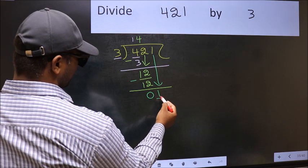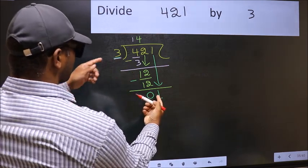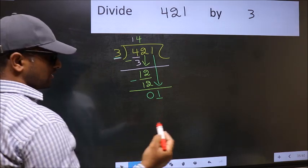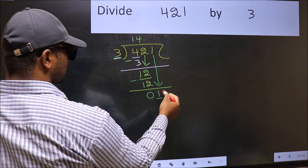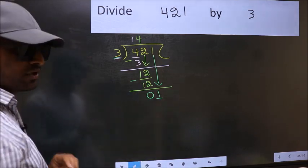And the mistake is this. Here we have 1, and here 3. 1 is smaller than 3. So, what many do is they directly put a dot and take 0, which is wrong.